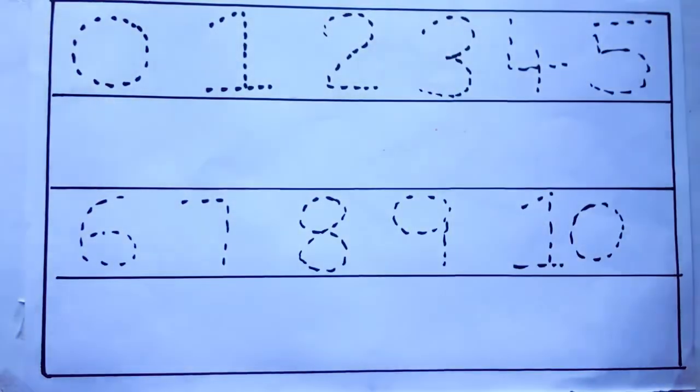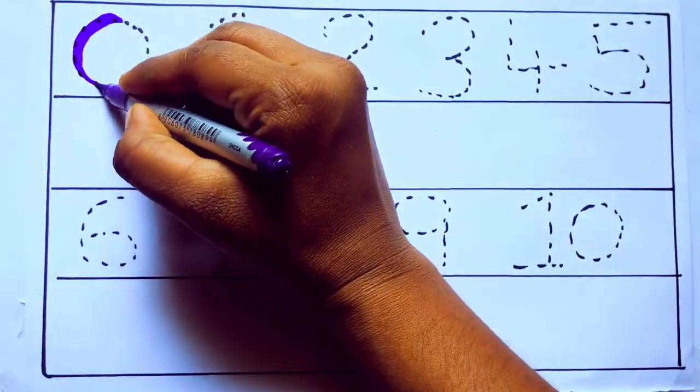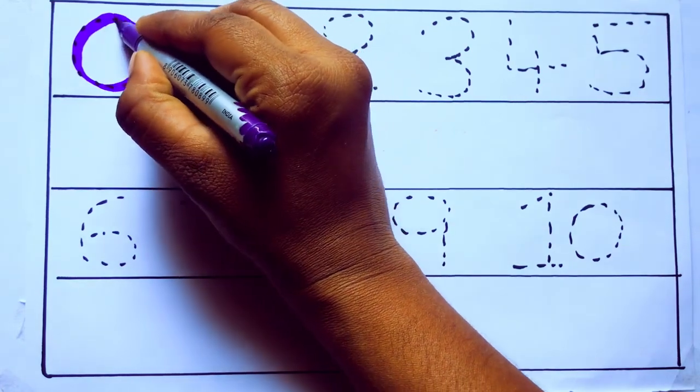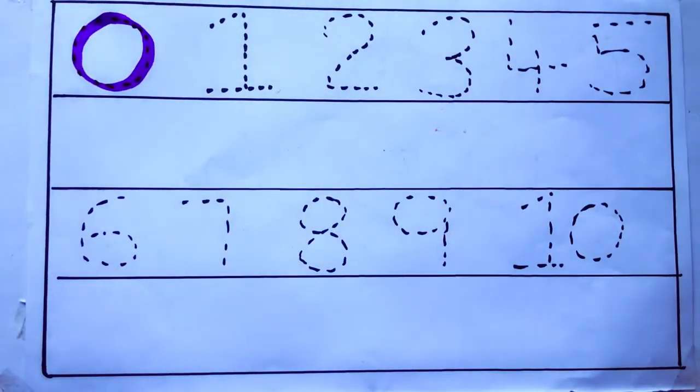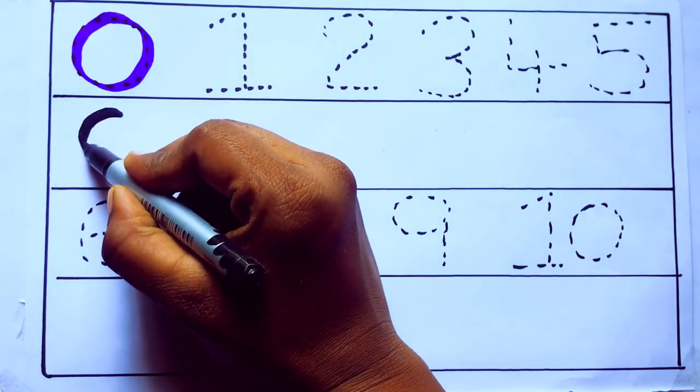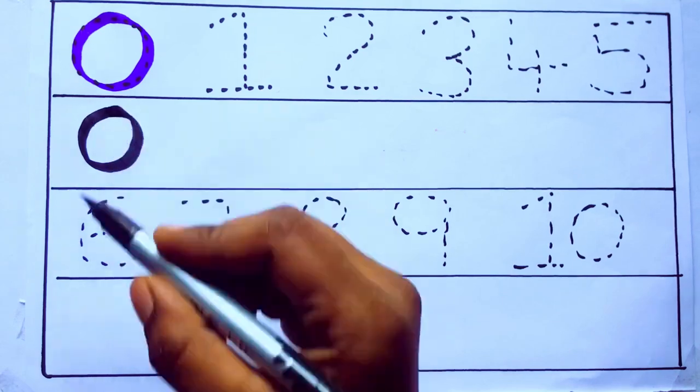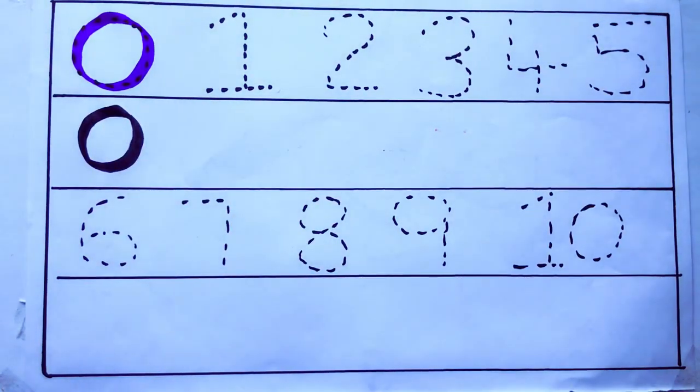Let's draw numbers. Violet color 0, Z-E-R-O. Violet color 0.